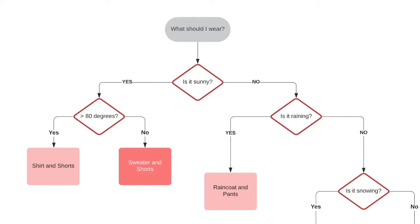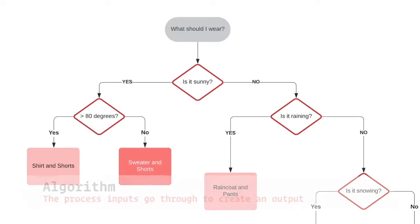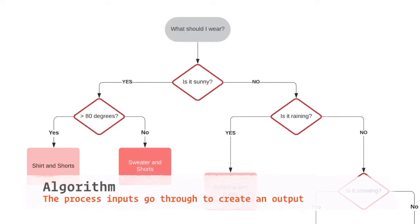Notice the use of the word if. This is how we can make decision trees and branches in our algorithms. An algorithm is a process or set of rules to be followed in calculations or operations — it's just the process or flow that inputs have to go through.